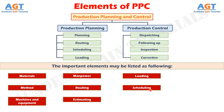Element No. 9: Dispatching. This is concerned with the execution of the planning functions. It gives the necessary authority to start a particular work which has already been planned under routing and scheduling functions. Dispatching is the release of orders and instructions for the starting of production in accordance with the routing sheet and scheduling charts.